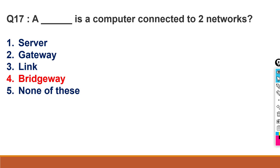So the question is, a dash is a computer that is connected to two networks. Which computer is connected to two networks? So it is a bridgeway. Now server, gateways, link - it's a different thing, so it doesn't have a link. It will also be eliminated here. Now there are two things that you have to confuse: one is gateway and the other one is bridgeway.